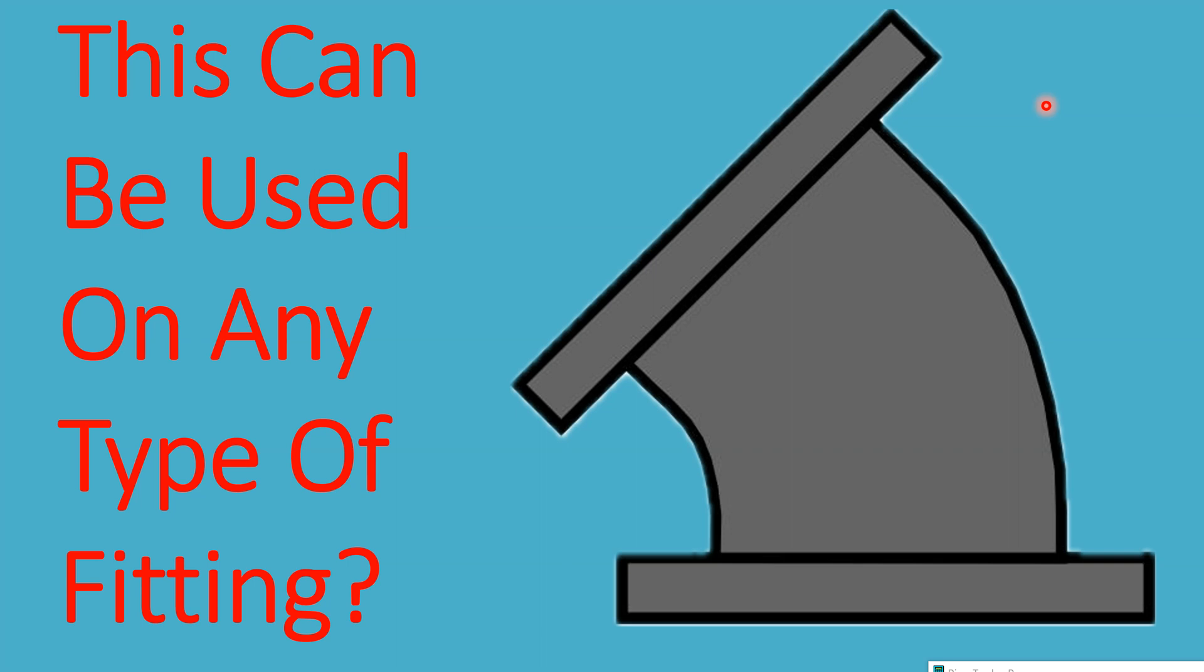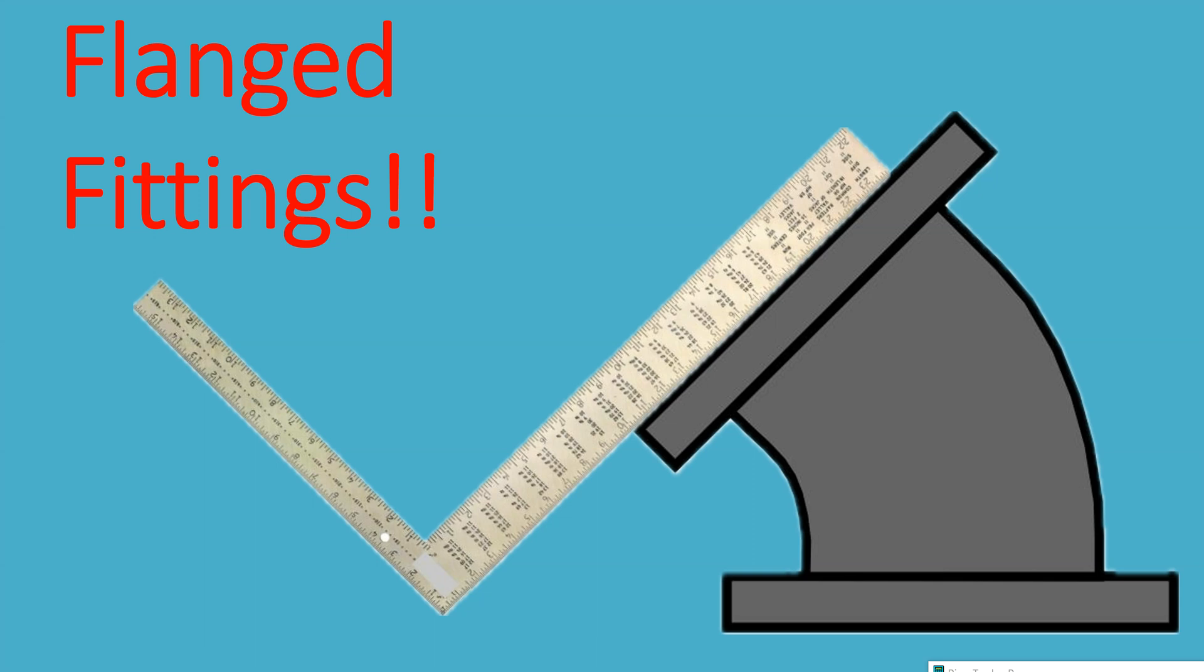You have a flange fitting, maybe a 125-pound flat face. Okay? You can take your square, run it across the face, bring it to the ground, mark it, apply the rules, put the run in, put half the angle of turn in, press offset. That'll give you the fitting takeoff.